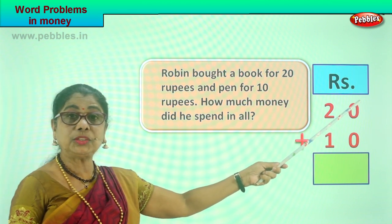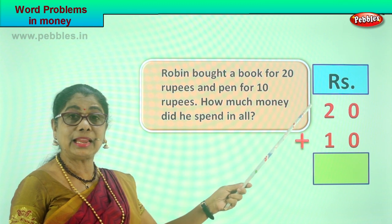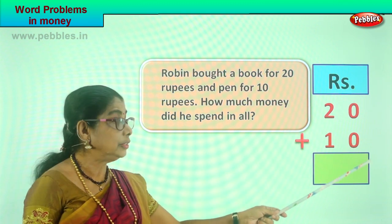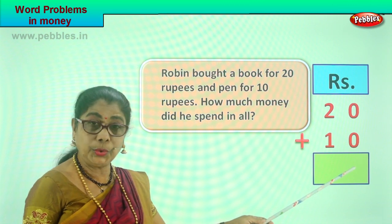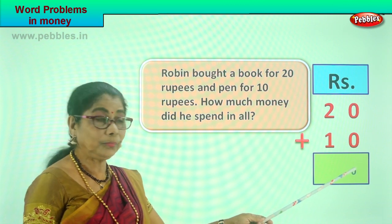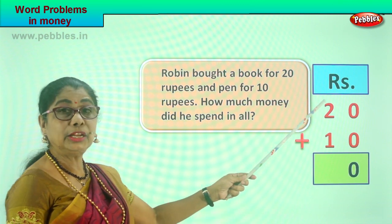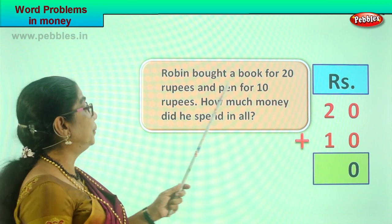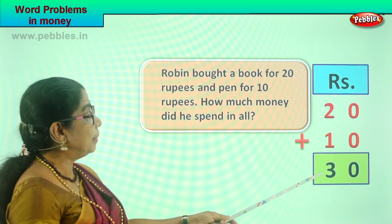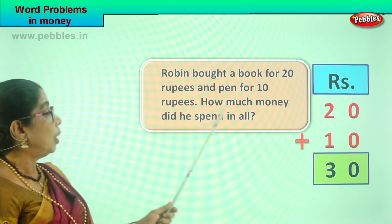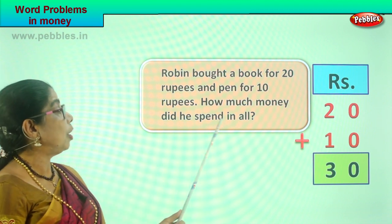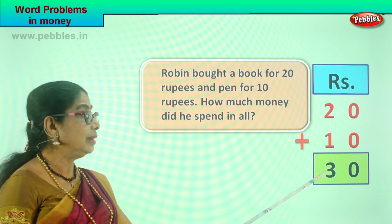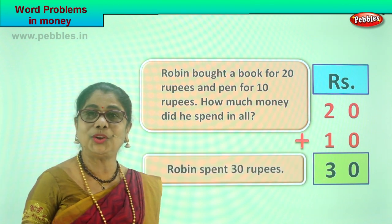First we go to the ones place. In the ones place we have two zeros. Zero plus zero is zero. Then we go to the tens place. Two plus one is three. So we write the number three here. How much money did Robin spend in all? Robin spent rupees 30 in all.